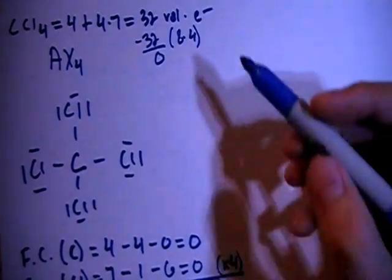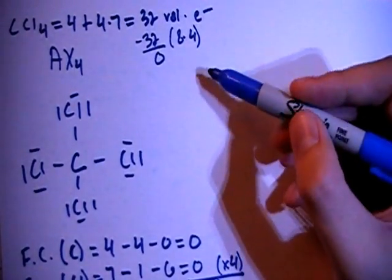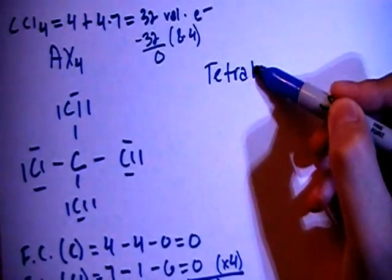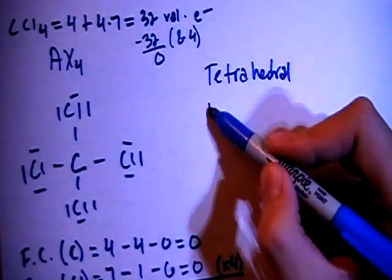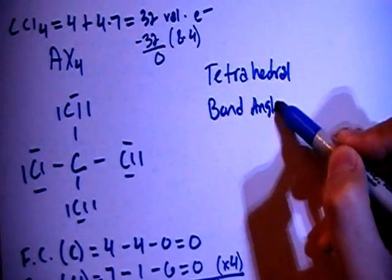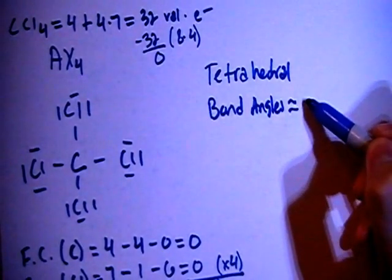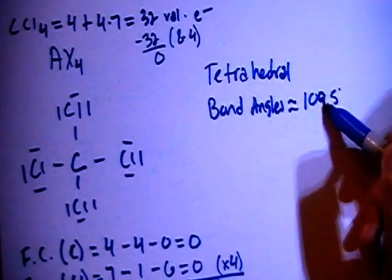Now let's talk about the shape. AX4, four surrounding atoms, no non-bonding pairs, means a tetrahedral shape. And with a tetrahedral shape, the bond angles are approximately equal to 109.5 degrees.